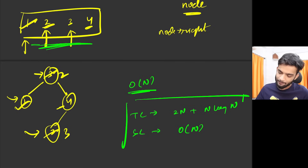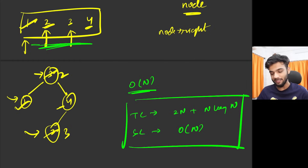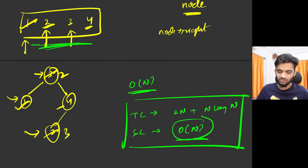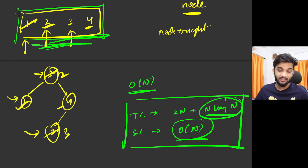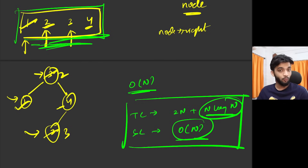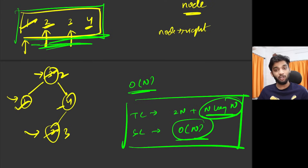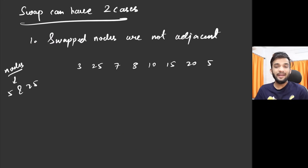The problems with this approach: I'm using extra space to store the inorder, and I'm using an O(n log n) factor for sorting. An interviewer will never want the log n factor, so this is the moment you have to come up with a better solution.